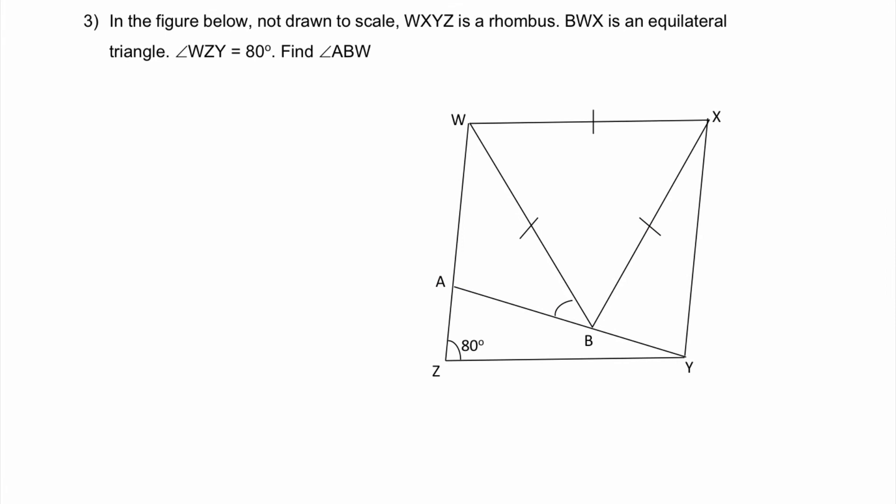In the figure below not drawn to scale, WXYZ is a rhombus and BWX is an equilateral triangle. Angle WZY is equal to 80 degrees. Find this angle ABW.